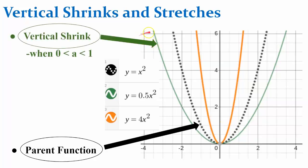The first example is a vertical shrink. It's the green function here, represented by y equals 0.5x squared, or 1 half x squared. When the absolute value, we don't care whether it's positive or negative when we're talking about a shrink or a stretch. When a, the absolute value of a, is between 0 and 1, so greater than 0 but less than 1, it is a vertical shrink.